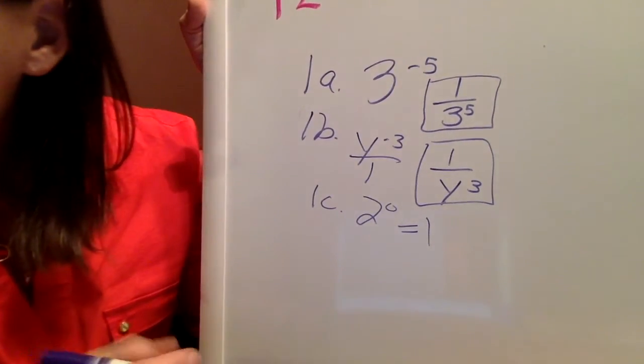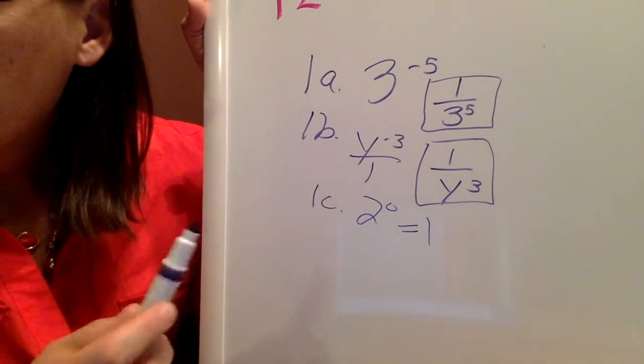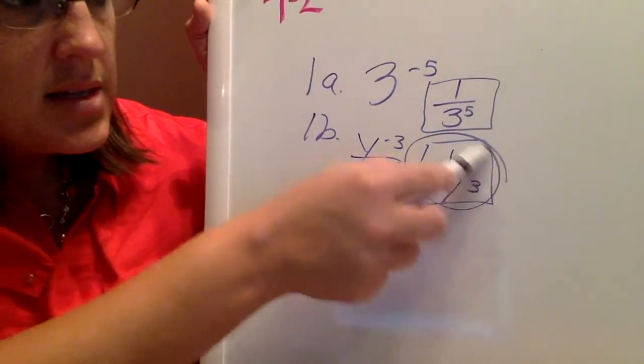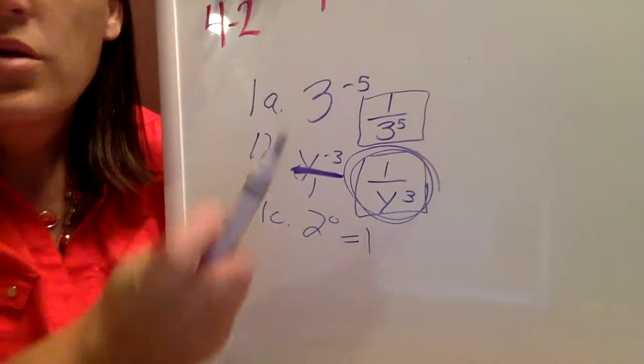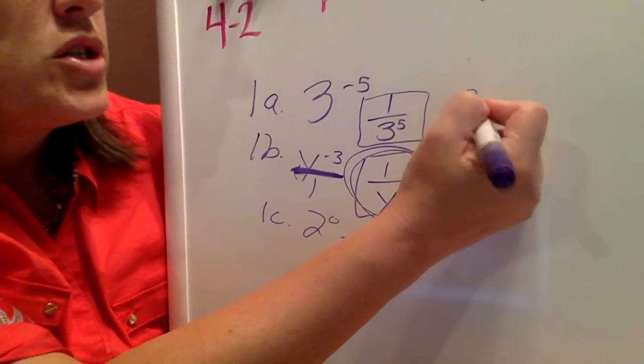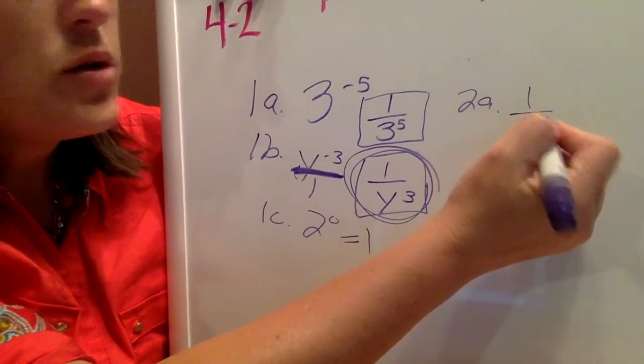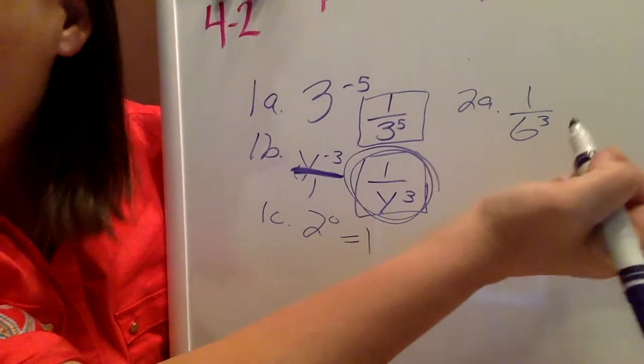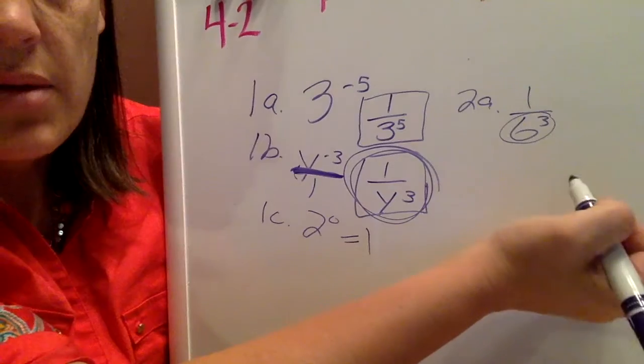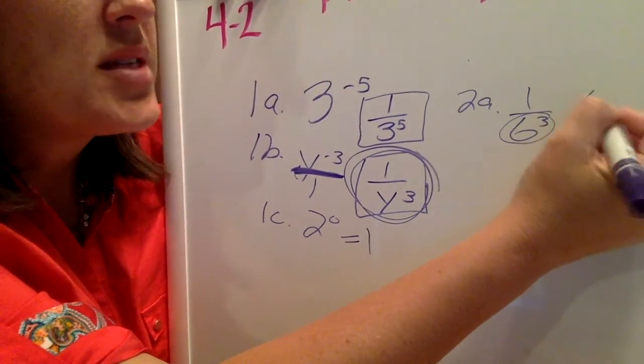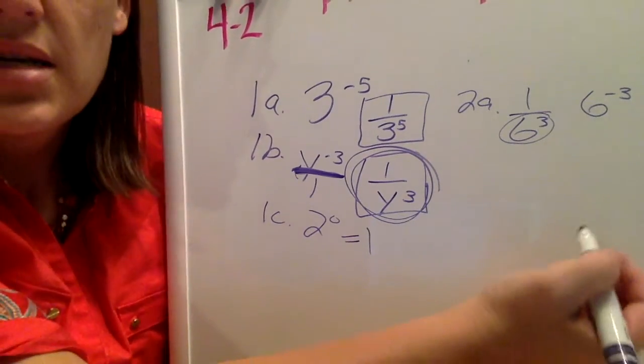Now let's look at example 2. Example 2 just has you going in reverse order where they give you this and you write this. So let's look at 2a. 2a says to rewrite 1 over 6 cubed using a negative exponent. So in order for that to move from the bottom and come to the top, we would do 6 to the negative 3, kind of working backwards. So 2a is 6 to the negative 3.